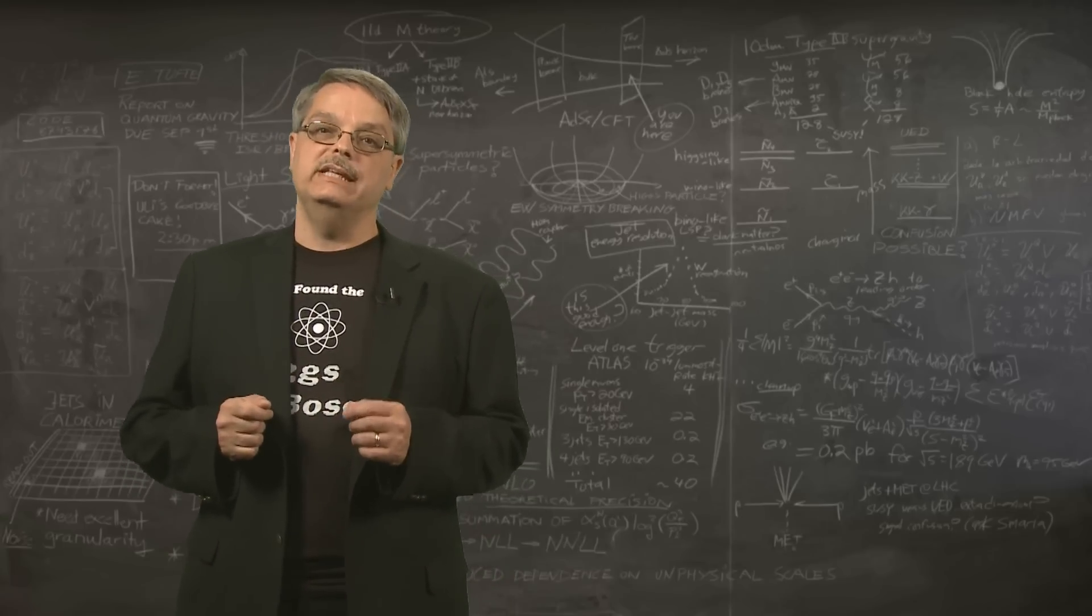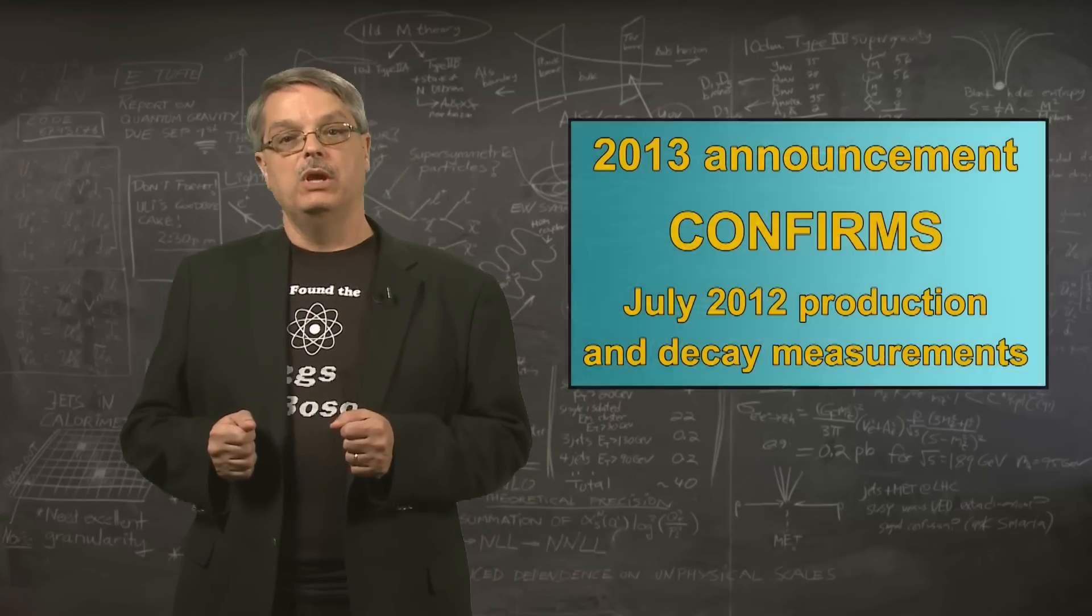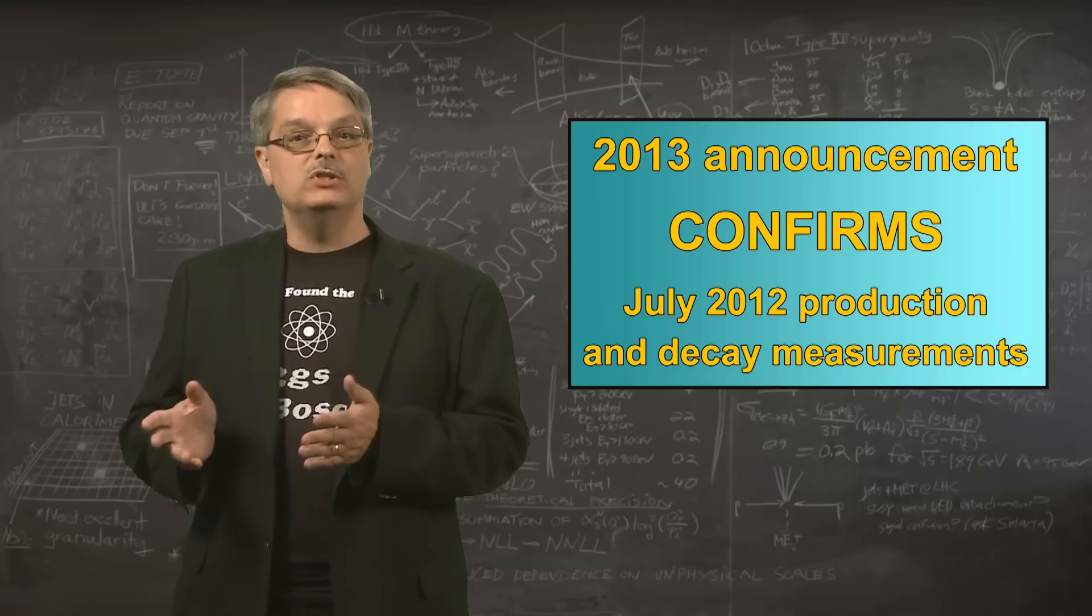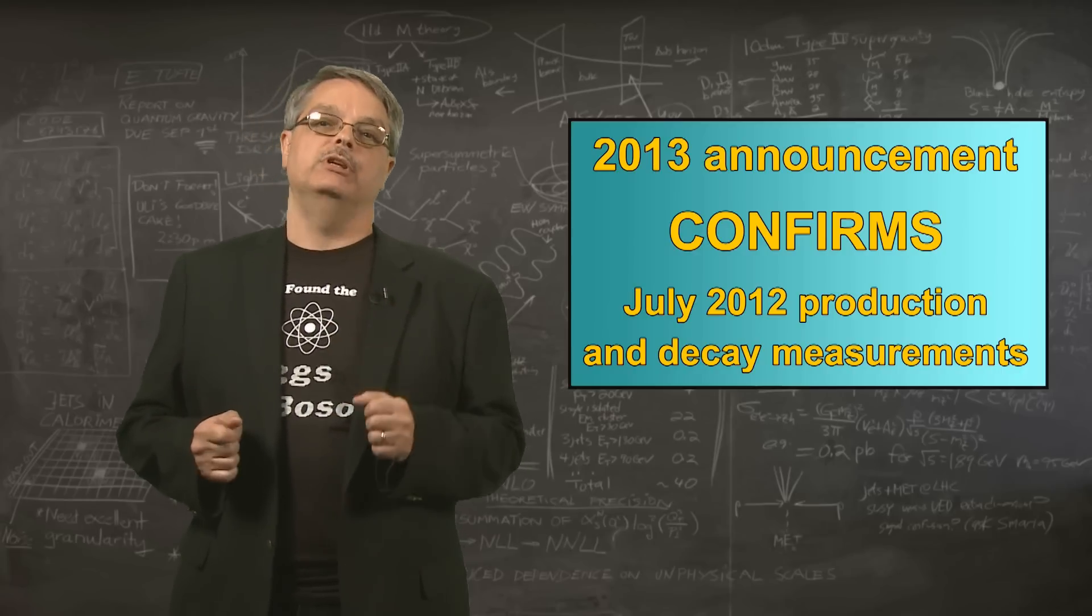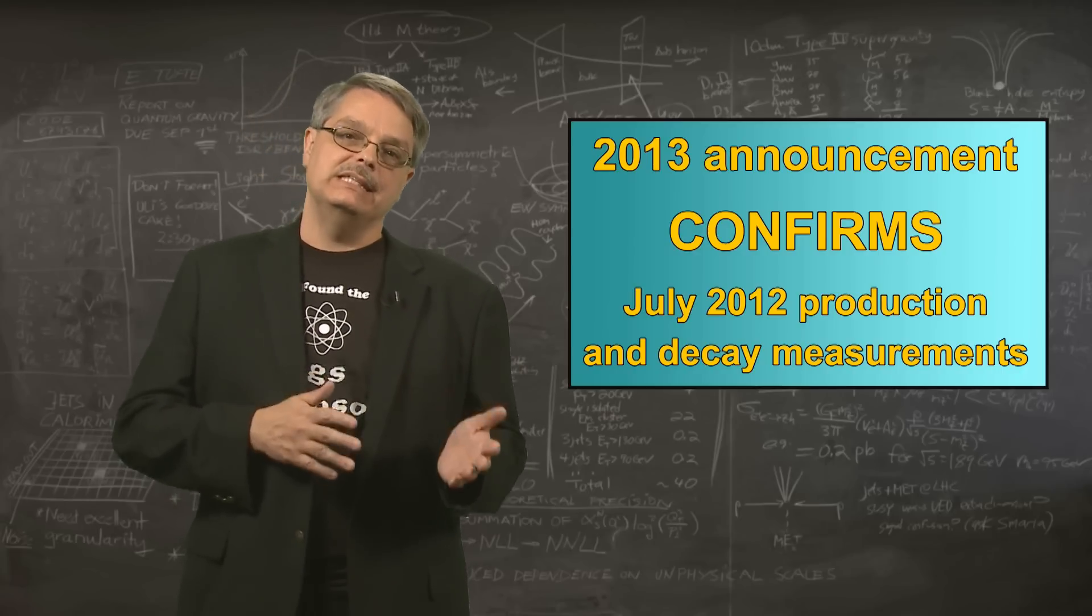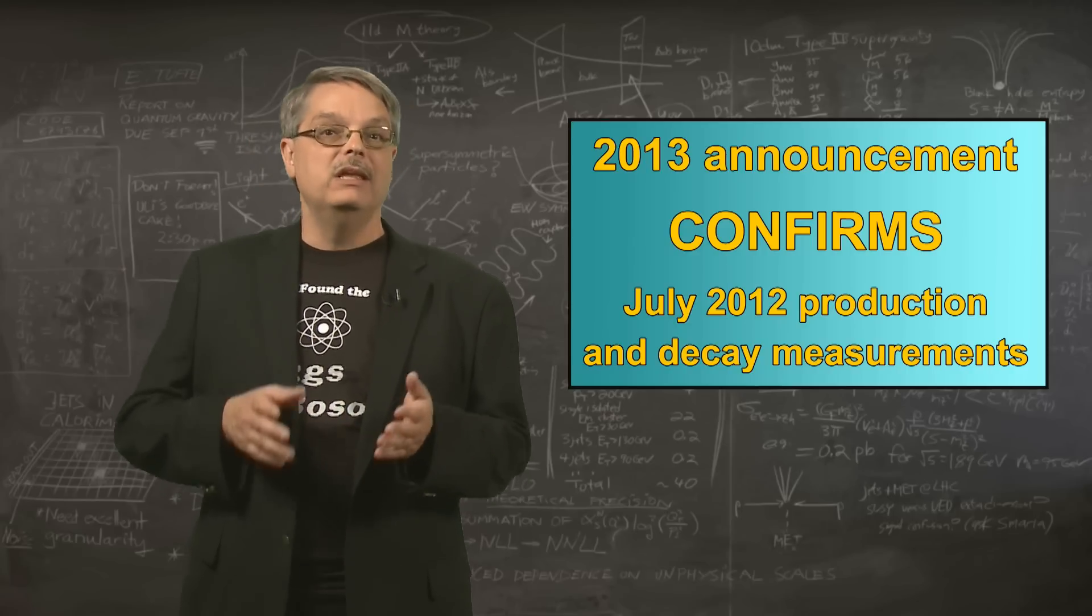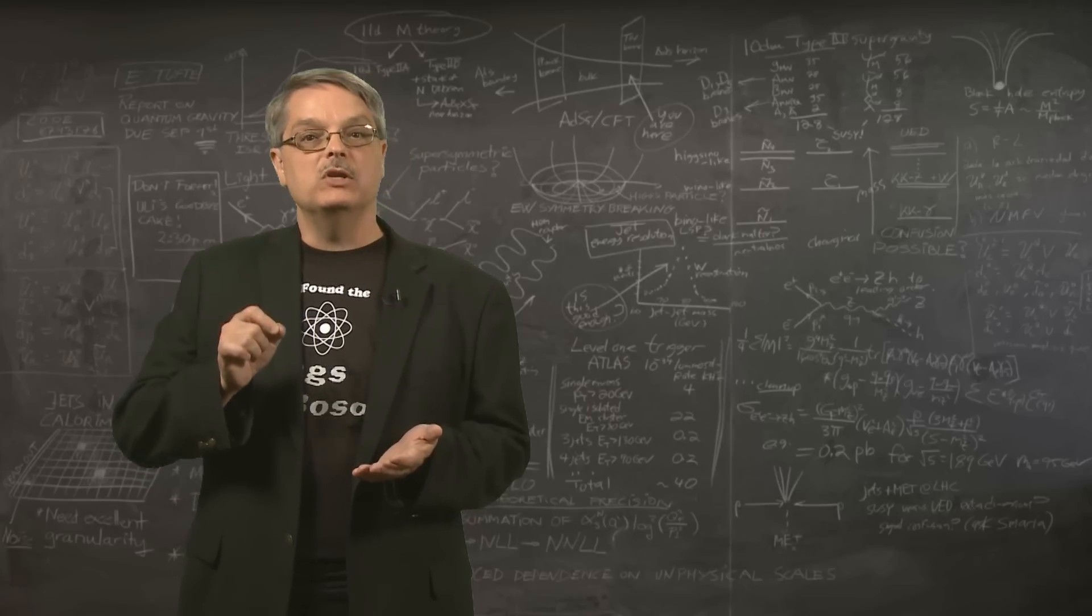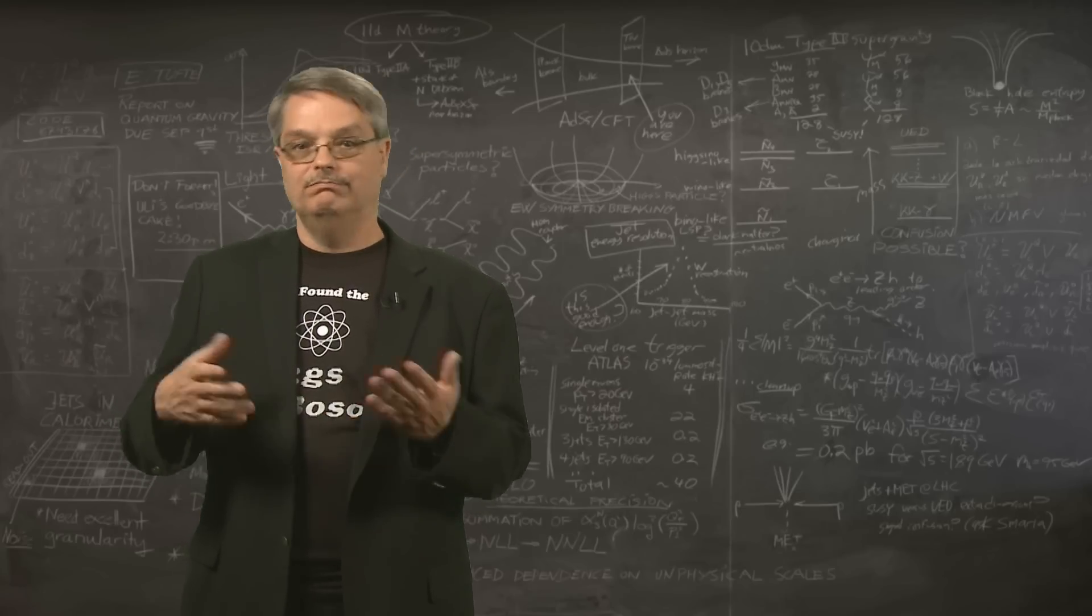In March of 2013, LHC scientists released the results of improved analyses. We measured the various ways a Higgs boson can be made and the many ways in which it can decay. All measurements were statistically consistent with predictions. The phrase statistically consistent means that while the measurements weren't exactly as predicted, they were as close as could be expected for the amount of data collected. These measurements were improvements over the results of July 2012, but were basically the same thing.